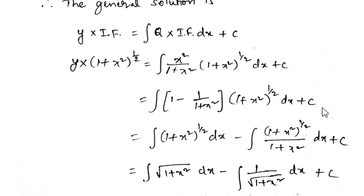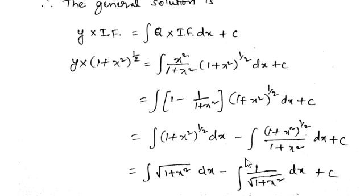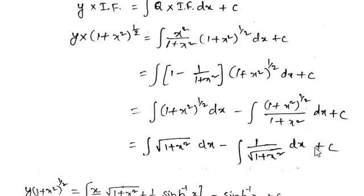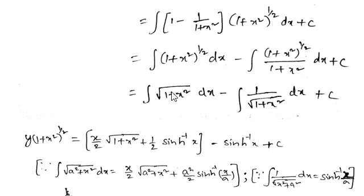Since x^(1/2) = √x, the second term becomes ∫(1 + x²)^(1/2) / (1 + x²) dx = ∫1/√(1 + x²) dx. So we have ∫√(1 + x²) dx minus ∫1/√(1 + x²) dx + c.